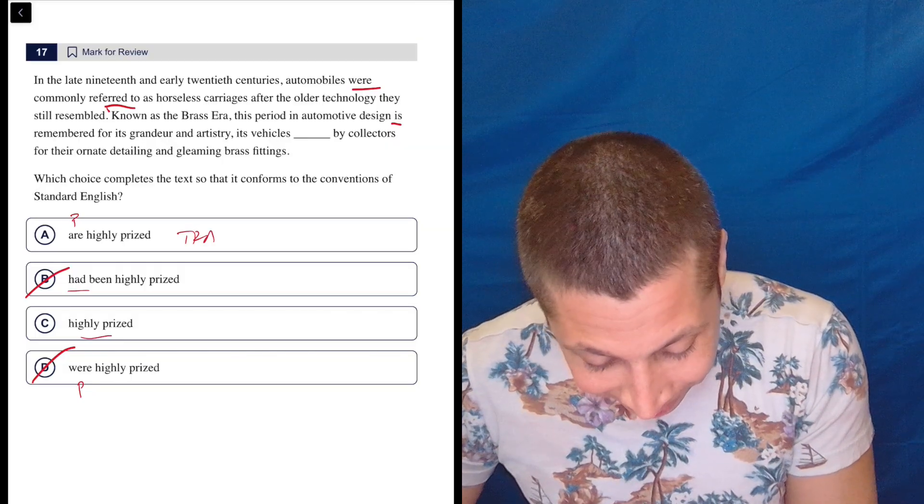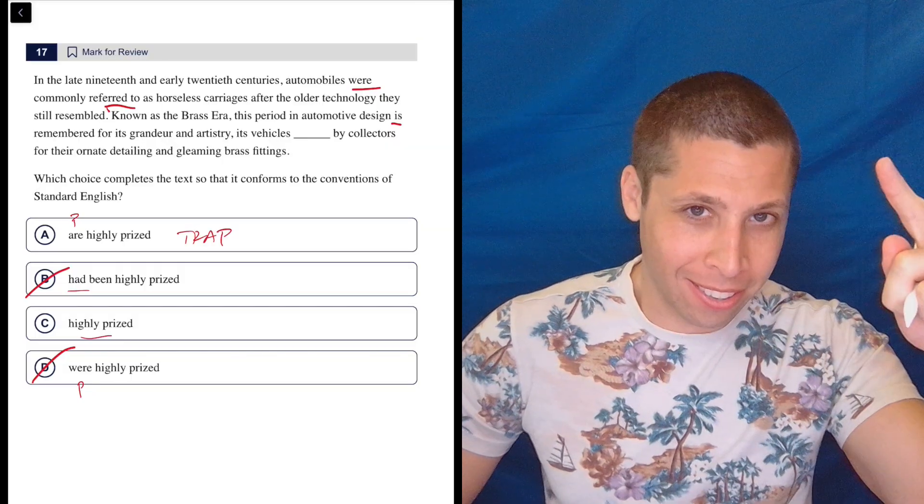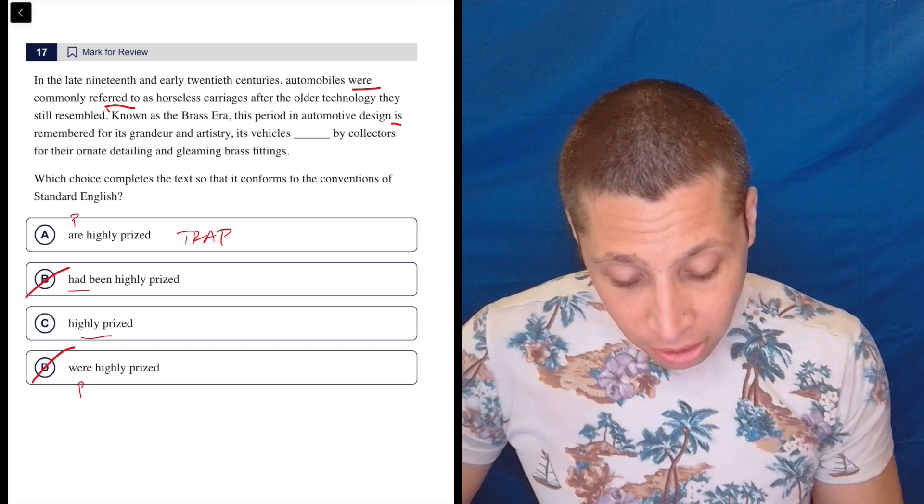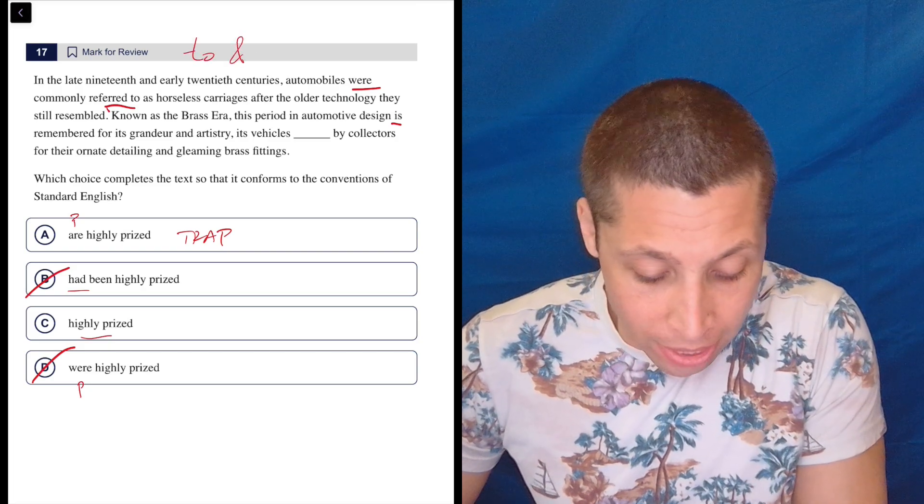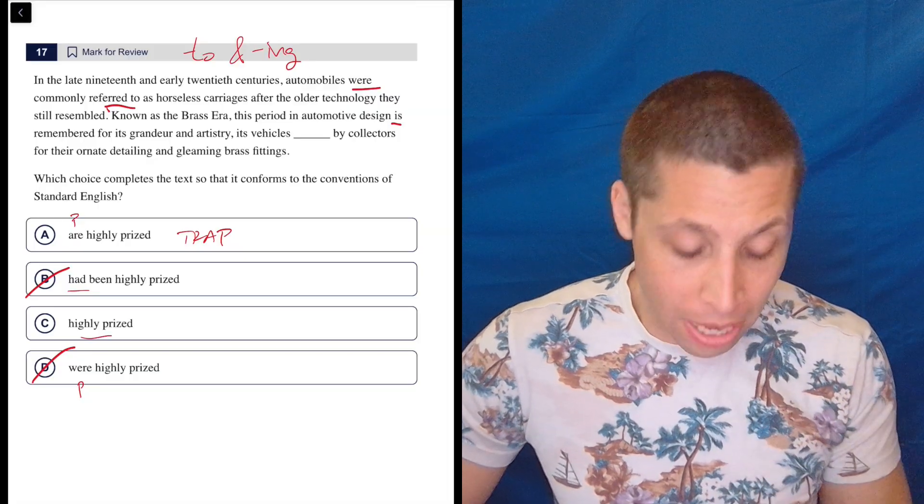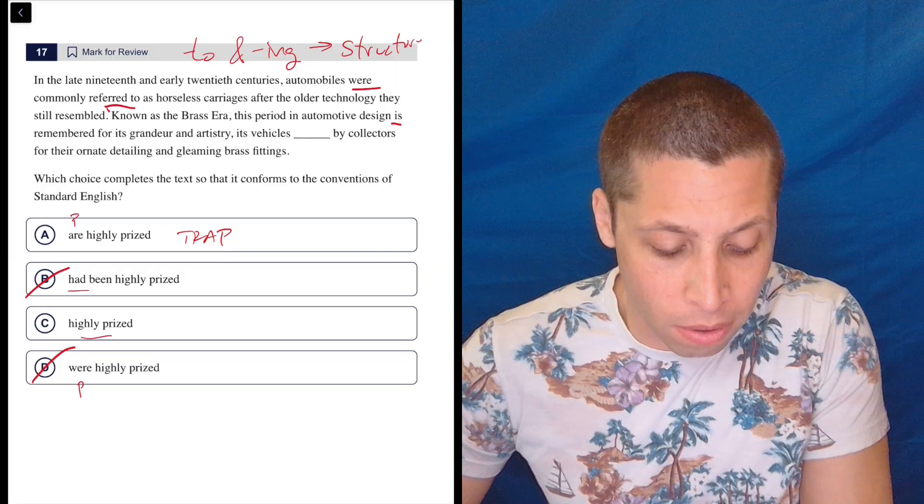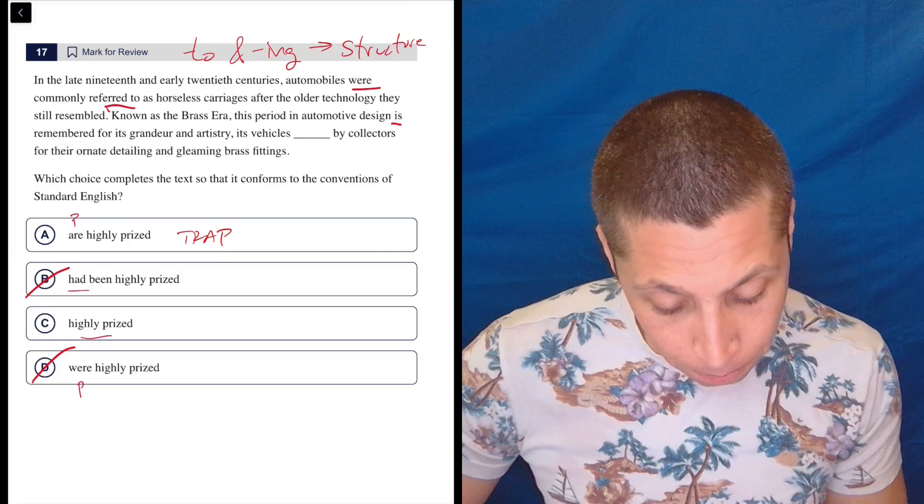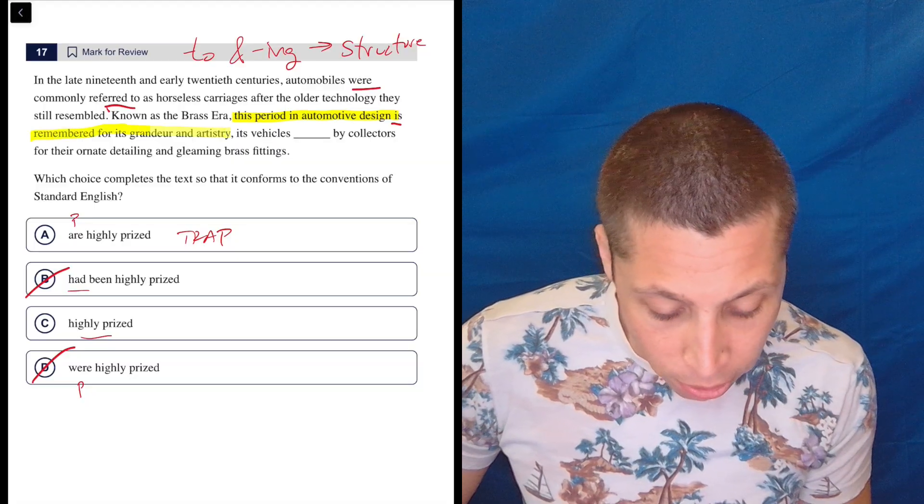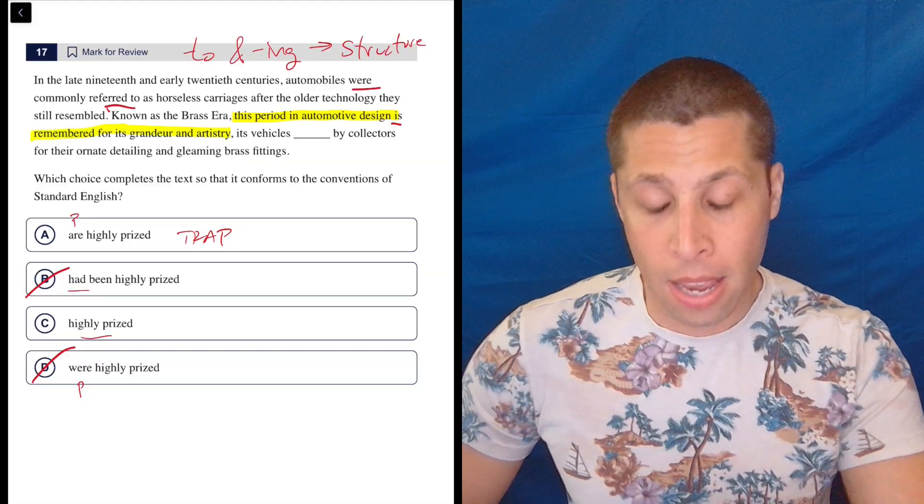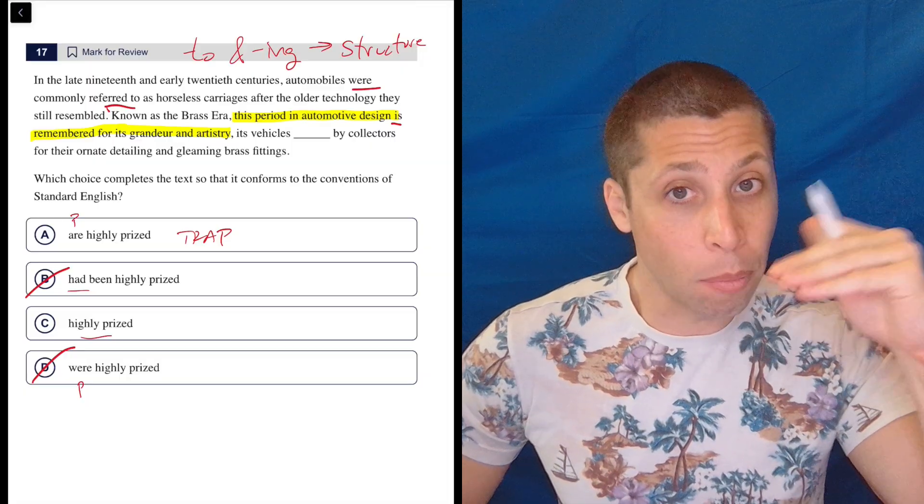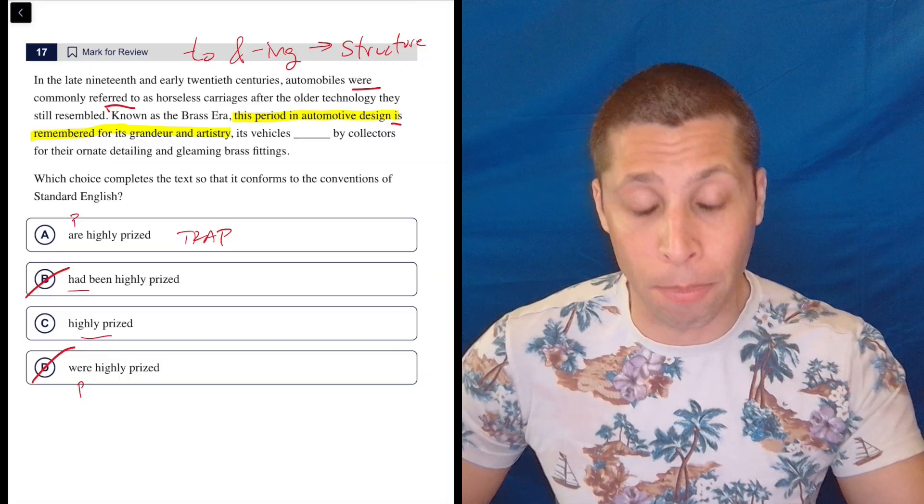However, that's also a trap because then the sentence gets all messy. So this is actually, this is so sneaky. I think this is just basically what I would think of as a to and ing question. Even though there's no to verb, there's no ing verb, it's still behaving the same way. It's about the structure of the sentence. So let's take a look here. Known as the brass era, this period in automotive design is remembered for its grandeur and artistry. That is a sentence. Now look what's coming. We have a comma. So we can't just throw in another sentence because then we have a run on. We have to use a comma and a word like 'and' or something like that.